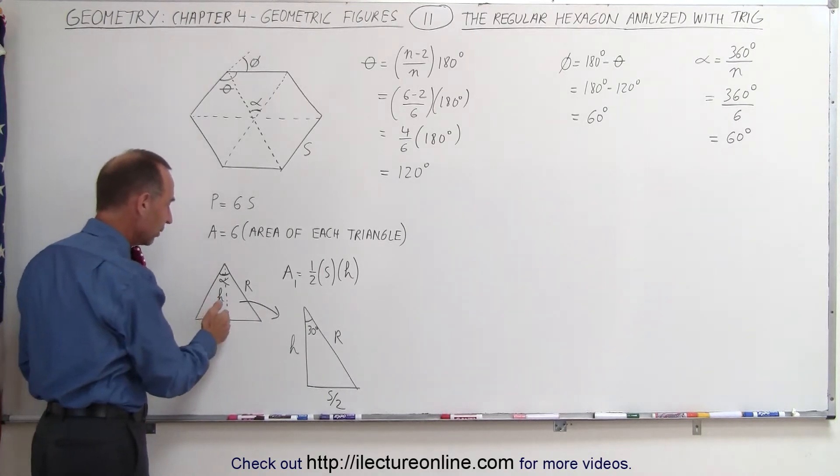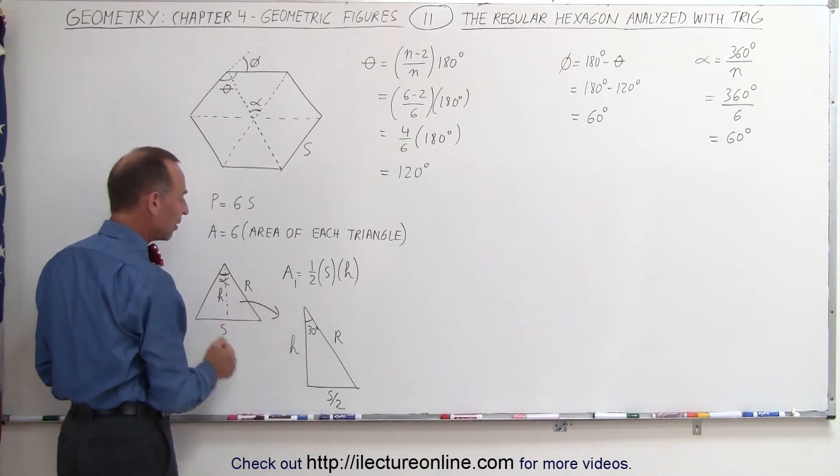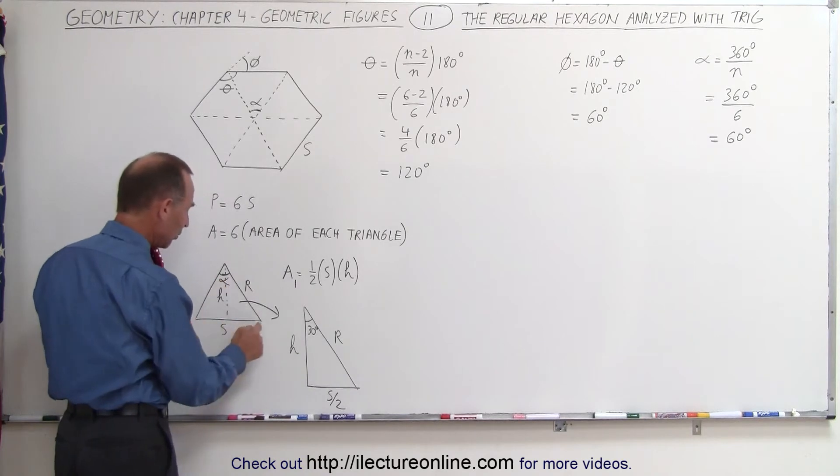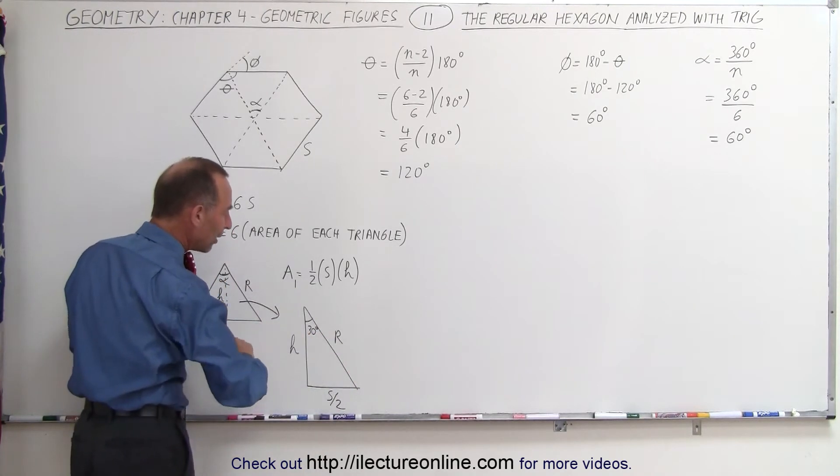If we now take half the triangle so this angle is 30 degrees, which is half of 60 degrees, we still have the height H. We have S divided by 2 because we took half the base. We still have R. Now we have a right triangle.